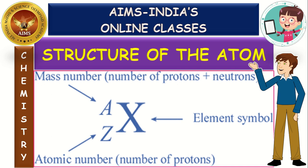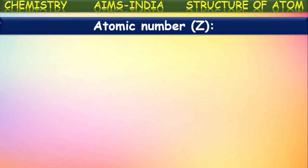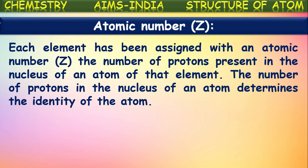In this session we are going to see some new points like atomic number and mass number of the elements. First, let us go through the atomic number. Each element has been assigned with an atomic number that represents the number of protons present in the nucleus of that element. The number of protons in the nucleus of an element determines the identity of the atom. Based upon the number of protons present in the nucleus of an atom, its atomic number is assigned.